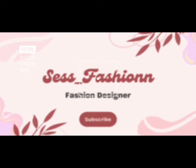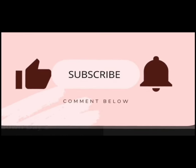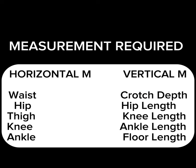These are the measurements required in drafting a pants pattern. We have the horizontal and the vertical measurements. The horizontal measurements are the circumference around the body, while the vertical measurements are the measurements along your body. For horizontal measurements we need the waist circumference divided by four, the hip circumference divided by four, the thigh divided by two, the knee divided by two, and the ankle. For vertical measurements we take the crotch depth, hip length, knee length, ankle length, and floor length.